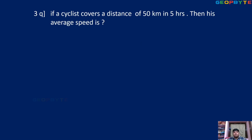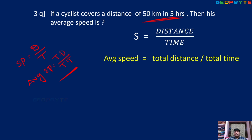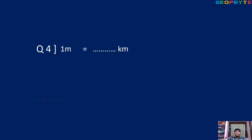Come to the question. If a cyclist covers a distance of 50 kilometers in 5 hours, then what is his average speed? Average speed means total distance by total time. Total distance is 50, total time is 5. Simplification: 10 kilometers per hour.